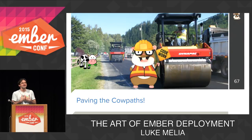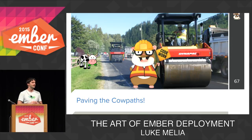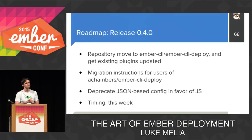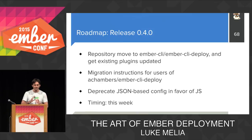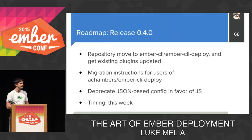This experience is what paving the cow paths is all about — going from an idea to a few different implementations experimenting with concepts, to now coalescing under one Ember approach. The roadmap for the next release is 0.4.0, a relatively small step. It ensures the ecosystem that had grown up around Ember Deploy moves over successfully to the new name and infrastructure. We'll provide migration instructions for users of old Ember CLI Deploy, and we're deprecating JSON-based configuration in favor of a JavaScript file so you can easily consume environment variables for sensitive credentials. We're hoping to release this by end of week.